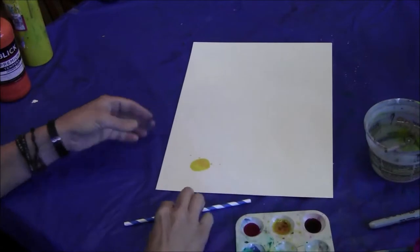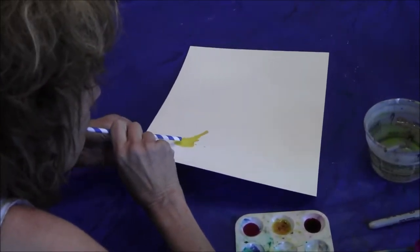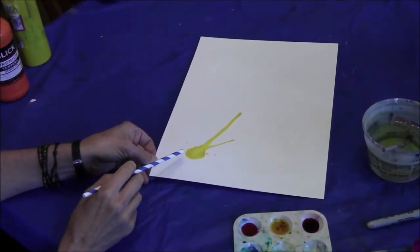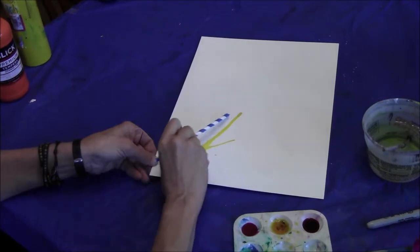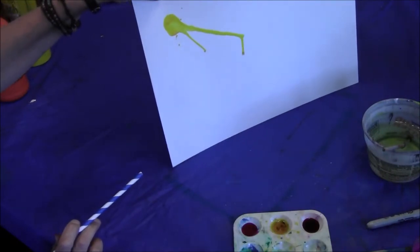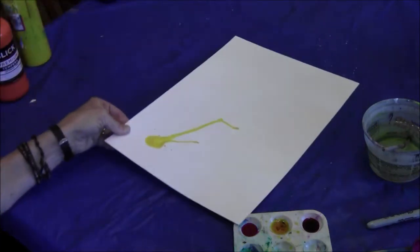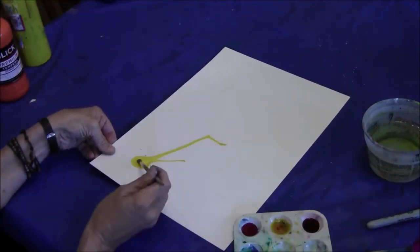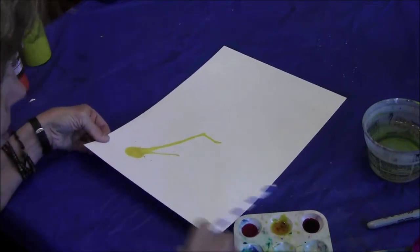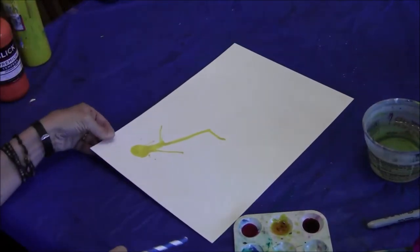And then take your straw and blow. You're making neurons here with dendrites and axons. You can help the process by tipping your paper and getting the paint to run, and you can add a little bit more paint if you want to get more.